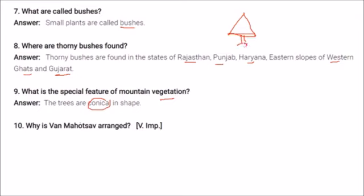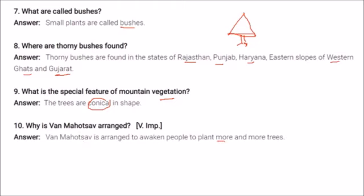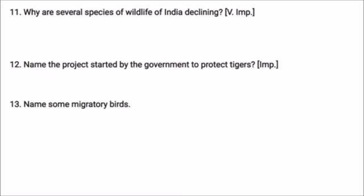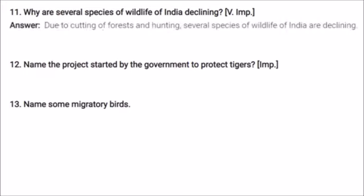Van Mahotsav is arranged to awaken people to plant more and more trees. Due to the cutting of forests and hunting, several species of wildlife in India are declining.